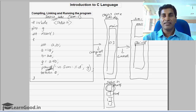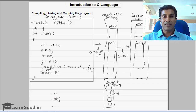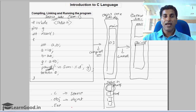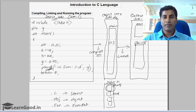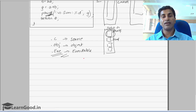You can run this program directly, so this file is called executable code. Whenever you write a C program there are three files which get created: one is .c, second is .obj, and third is .exe. The .c is the source code which we created; the .obj is created by the compiler and we call it object code; and the linker creates the executable code. Once you get this executable code you can directly run the program — you do not need the compiler or linker again to run it.